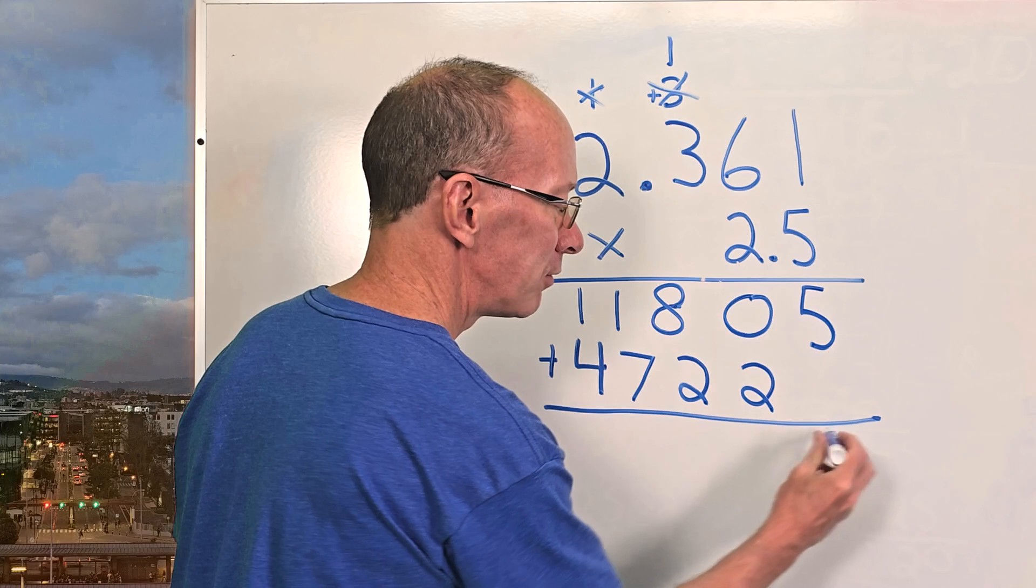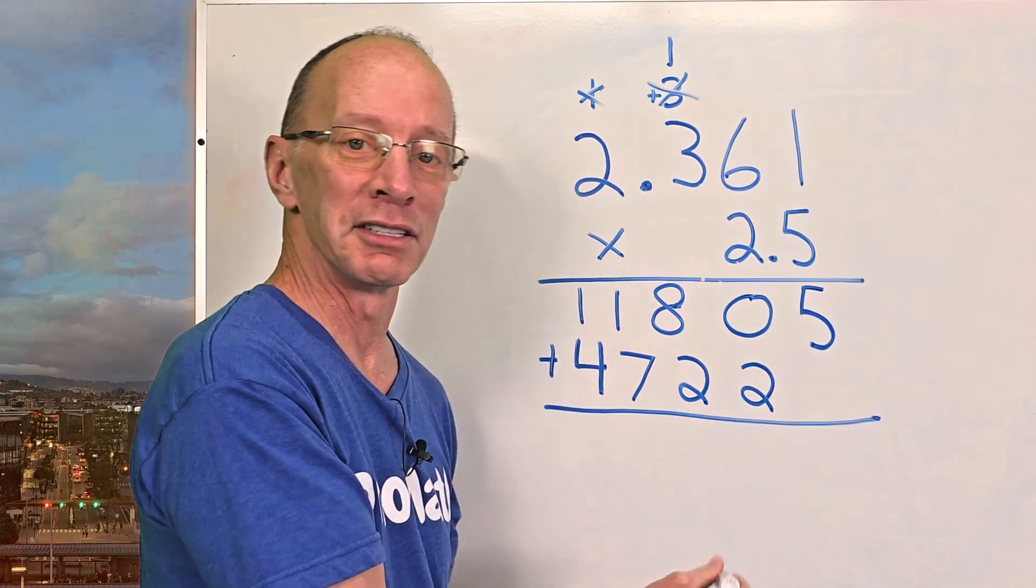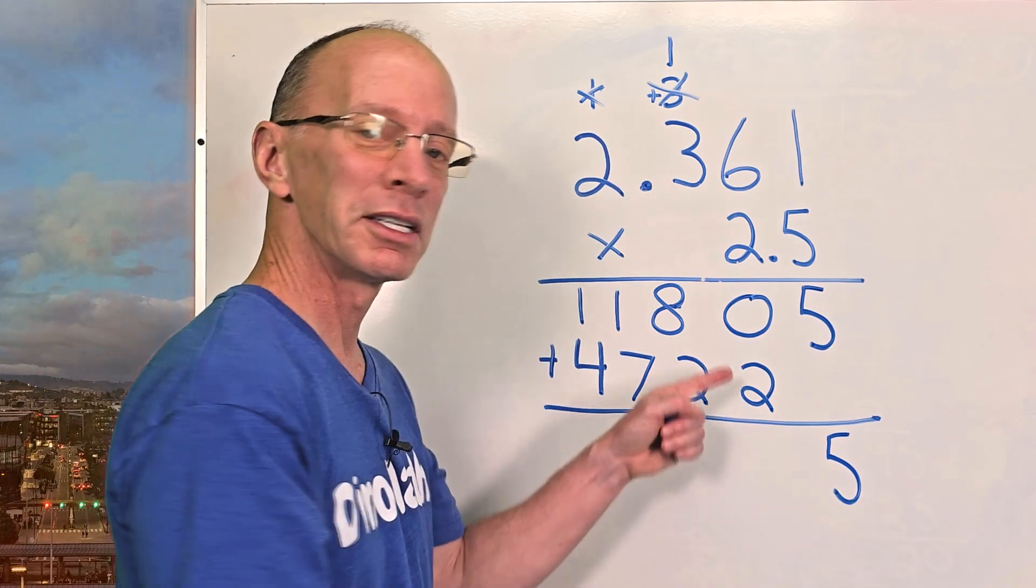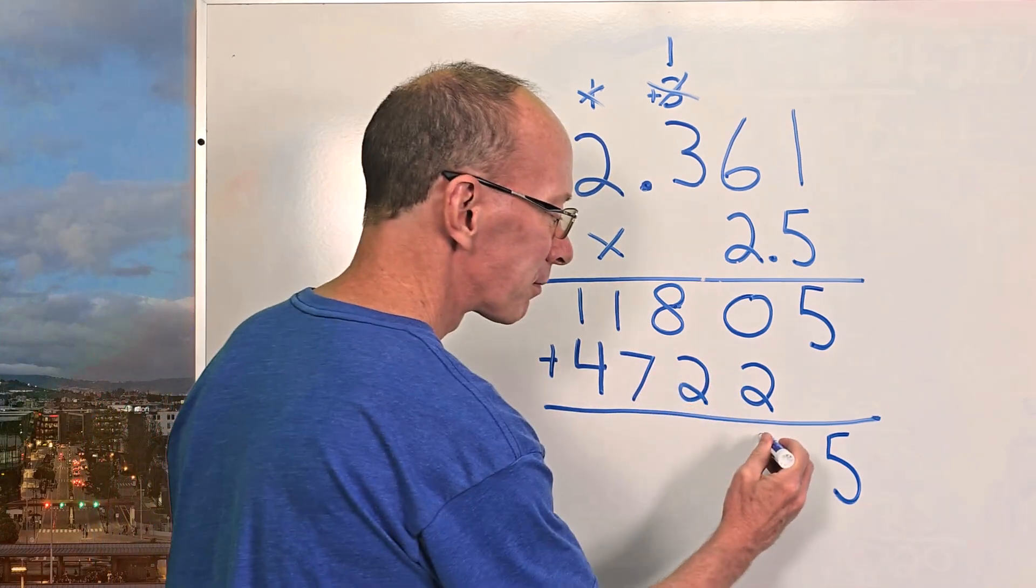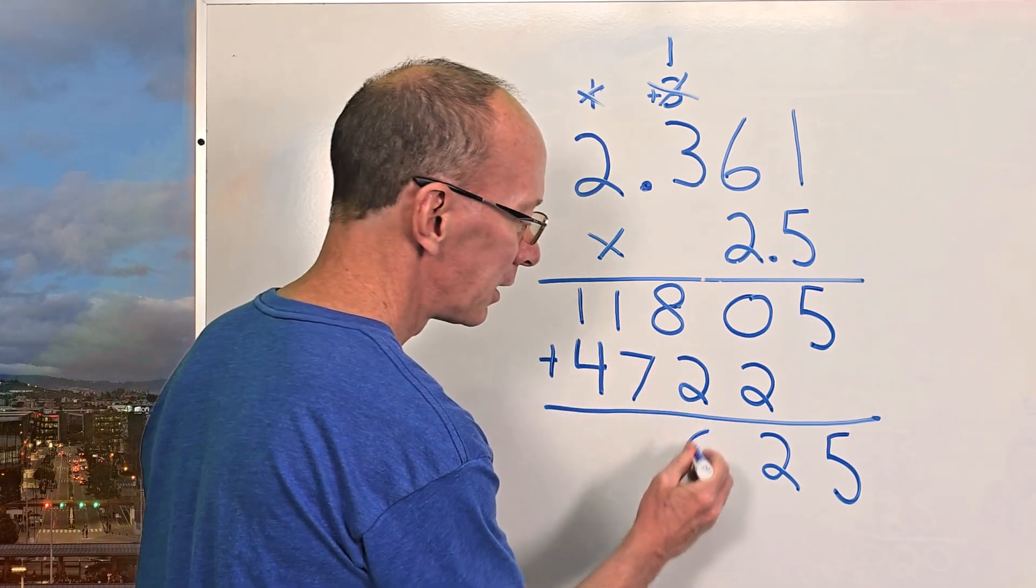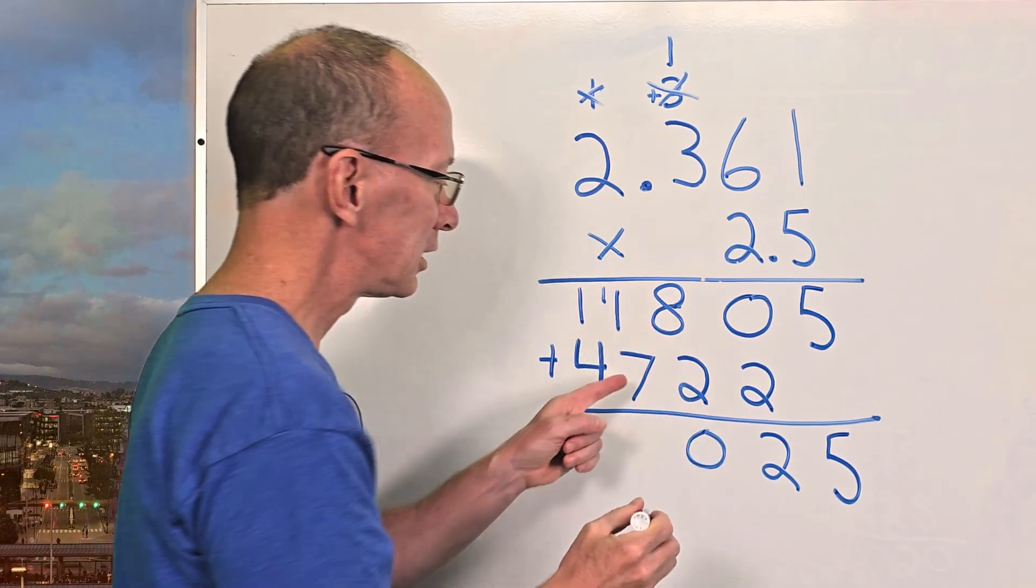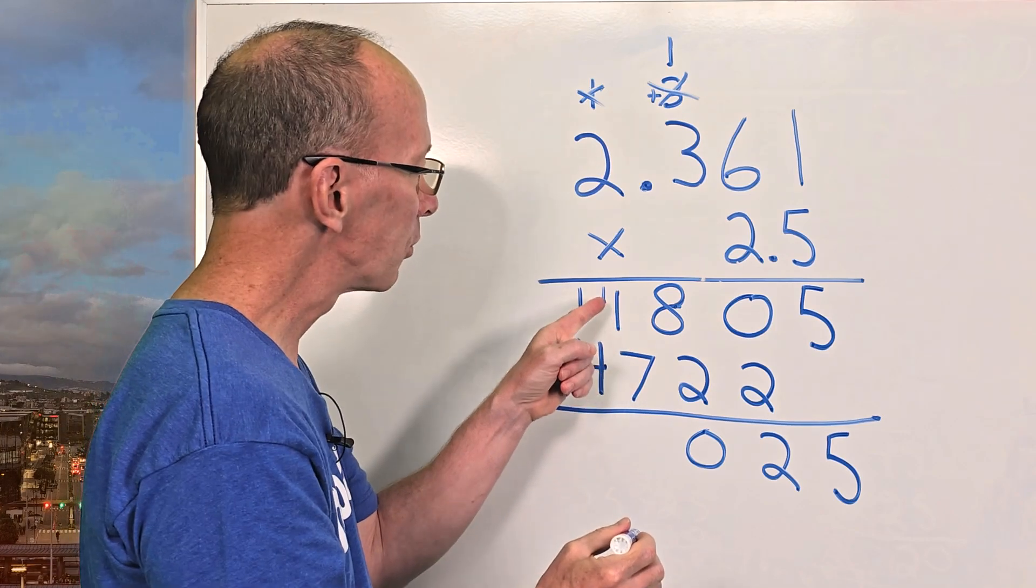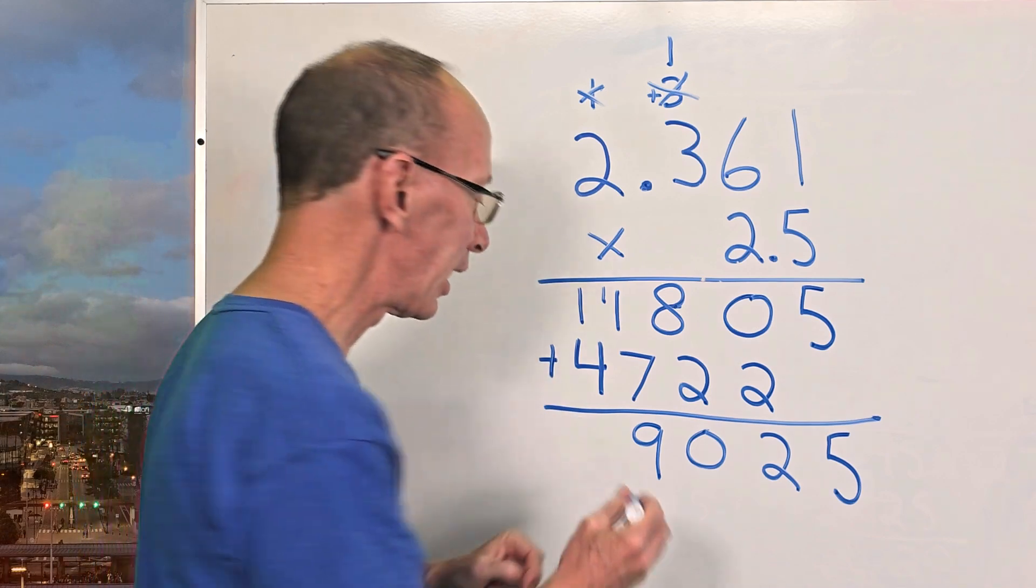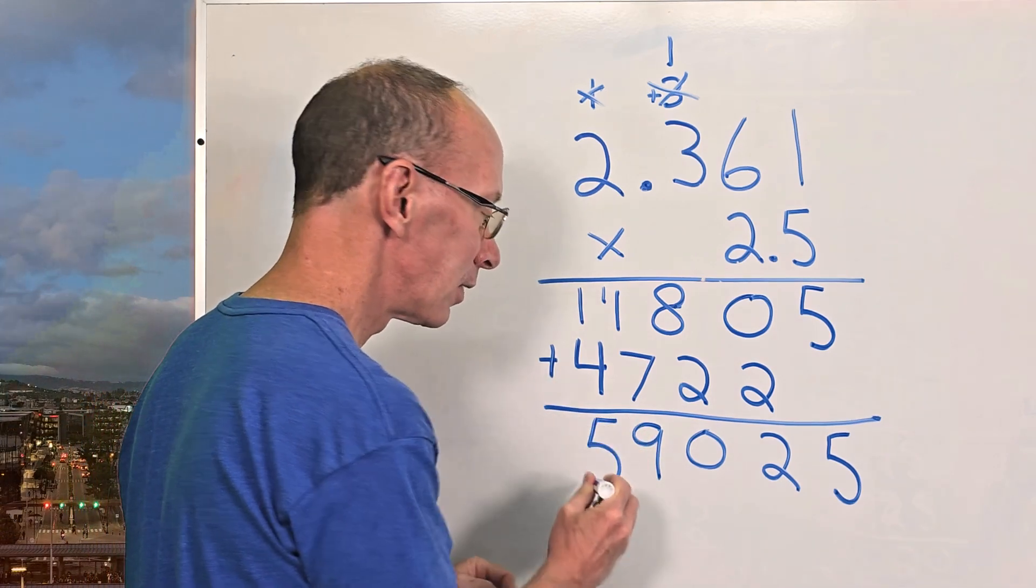All right, let's go ahead and add. Five, just there's nothing to add, just drop it down. Two plus zero, two. Eight plus two, 10. Carry the one up here. Seven plus one is eight plus the one up there, nine. And then four plus one is five.